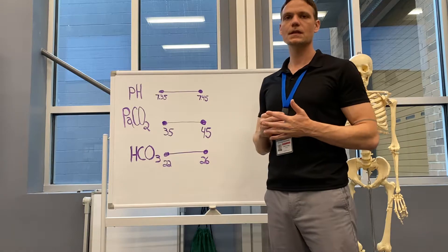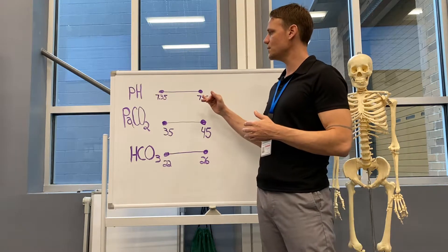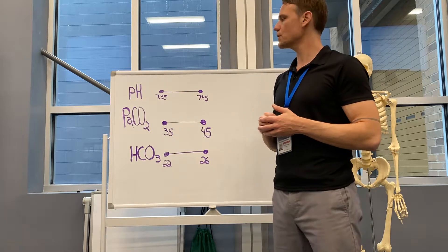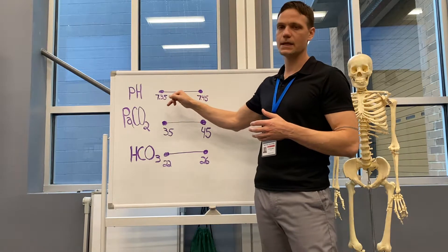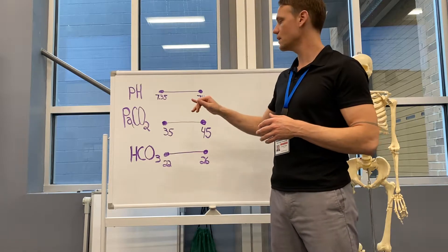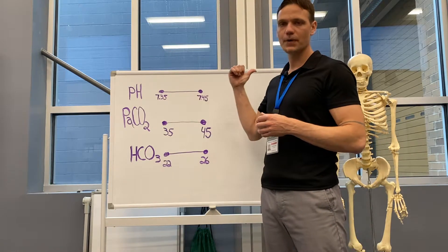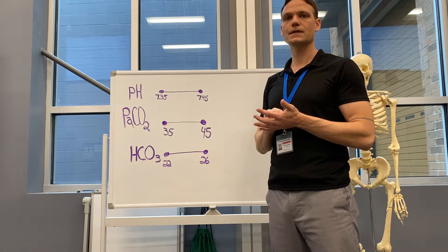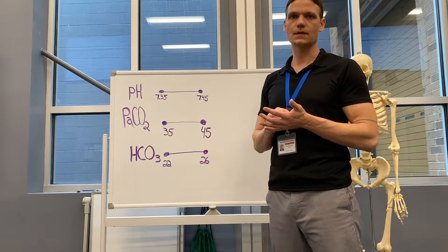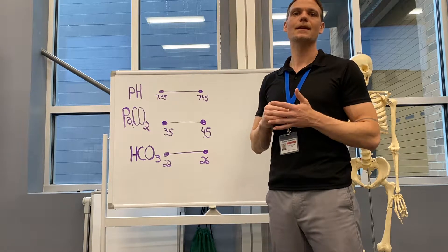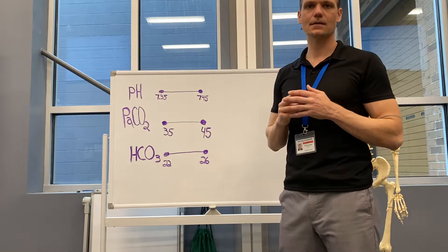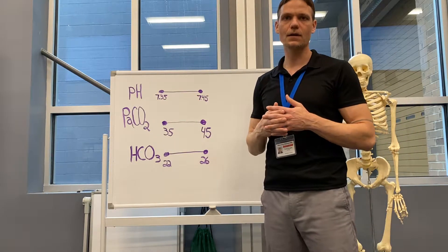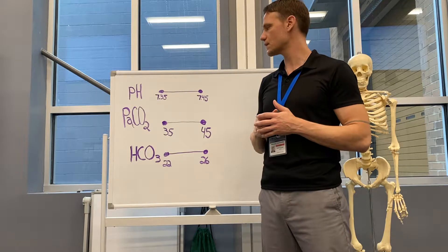One of the first things we want to consider when interpreting ABGs is to look at pH. Our normal pH is 7.35 to 7.45. When we're above 7.45, that puts us into alkalosis, and we associate alkalosis with terms like base. When we're below 7.35, we are moving towards acidosis.